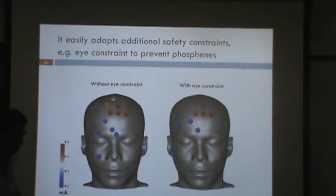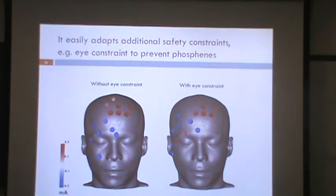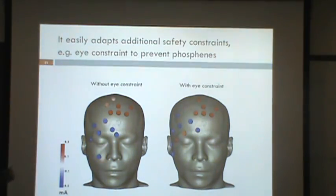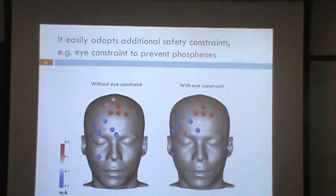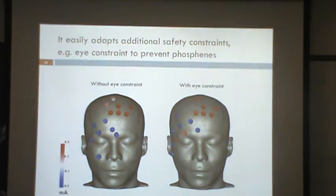The following slides show the flexibility of the formulation. We added another constraint limiting current in the eye to prevent phosphenes. In the second optimization scenario, the optimal pattern results in less current in the eye as intended. This demonstrates we can put additional constraints depending on the needs of the subject or the requirements of different scenarios.